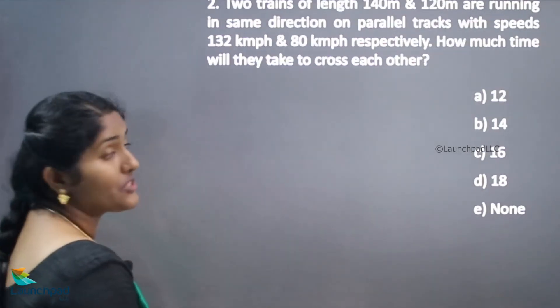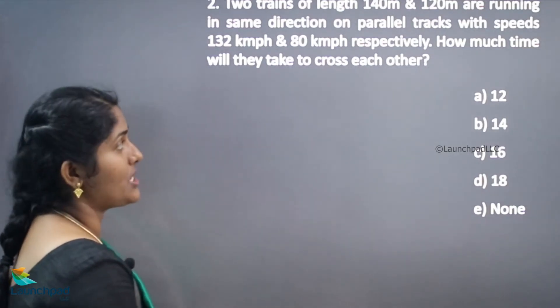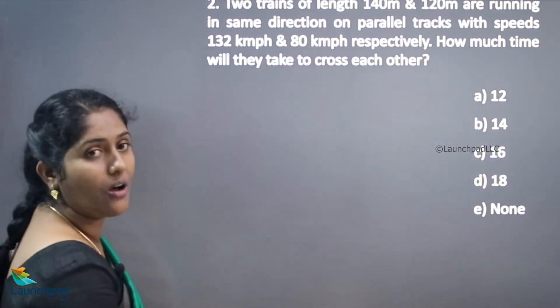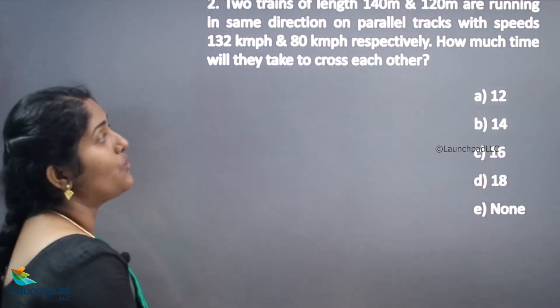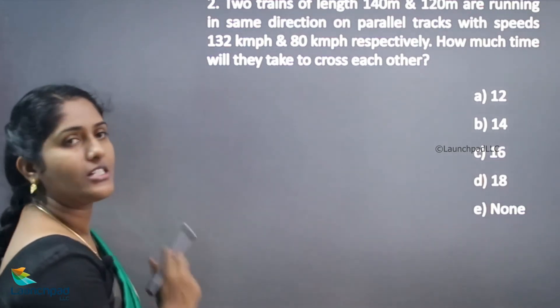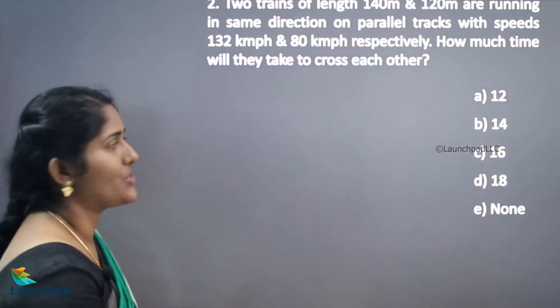Let's see our next question. This is your next question. Two trains of length 140 meter and 120 meter are running in the same direction on parallel tracks with speeds 132 kilometer per hour and 80 kilometer per hour respectively. How much time will they take to cross each other?